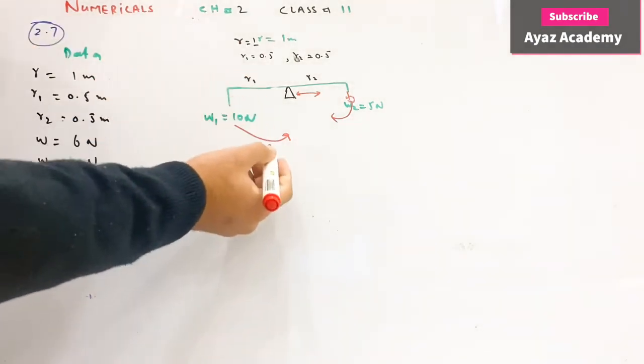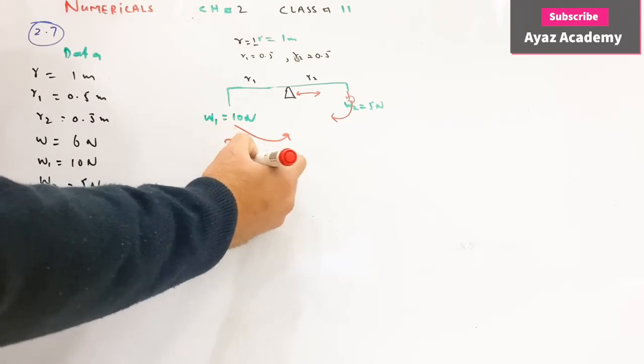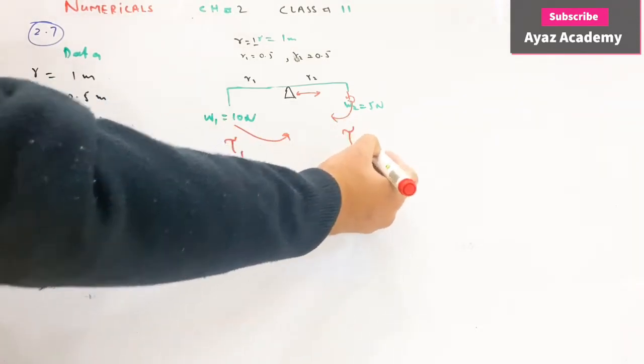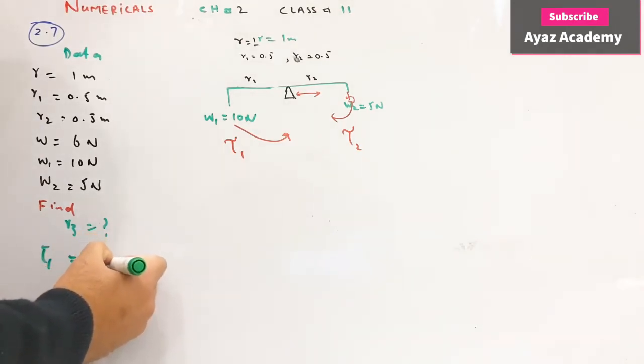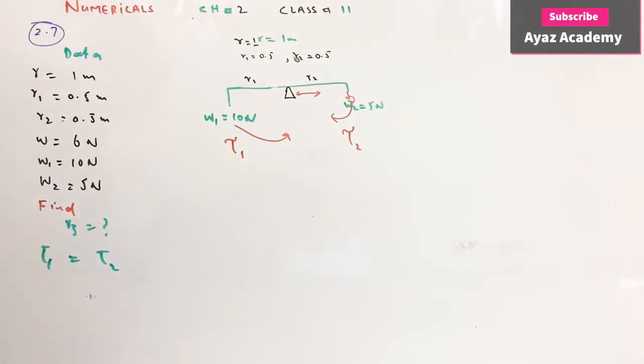Is weight ke wajah se jo tarp paida hoga, ho humare paas hoga tarp 1 aur yeh hoga tarp 2. Body balance mein hoga jab tarp 1 aur tarp 2 balance hoonge. Balance ke liye jo condition hai wo kya hai? Jab ek side pe jo tarp ke fight hai body pe wo balance hoonge dusari side pe jo tarp hoga. Tarp turning effect of body is called tarp, mathematically equal hota hai force into momentum.